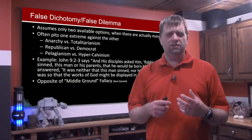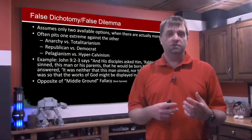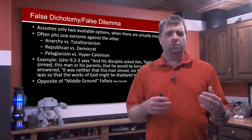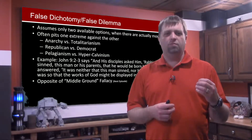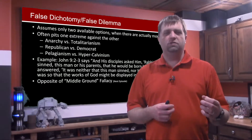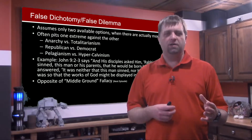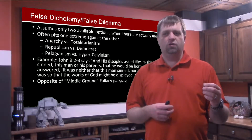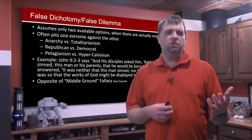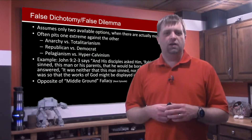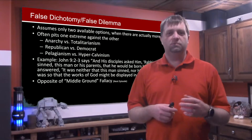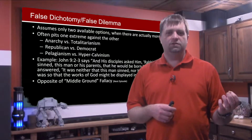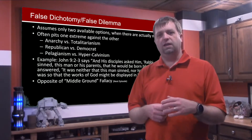We'll see this in governmental systems, and with any of these examples, what we're looking at is extremes. A lot of times when you see a false dichotomy, it's looking at extremes, trying to show that one extreme or the other has to be the case. In governmental systems, we see that as maybe authoritarianism or totalitarianism versus anarchy.